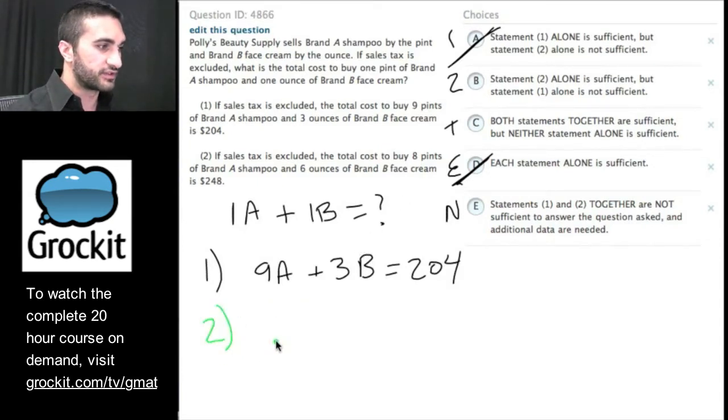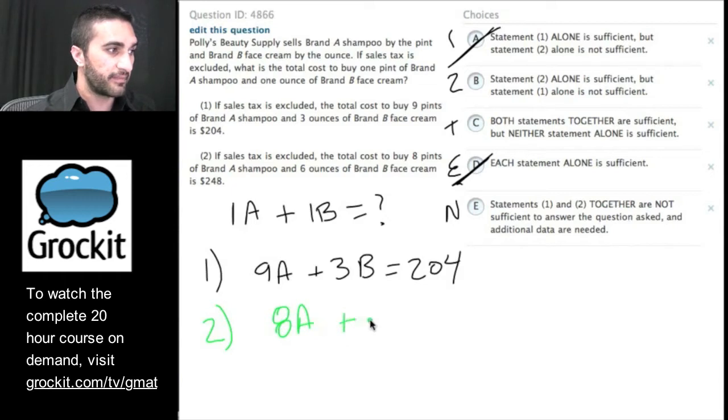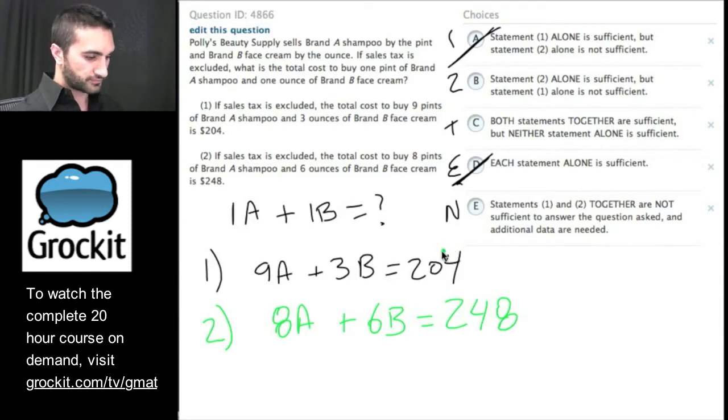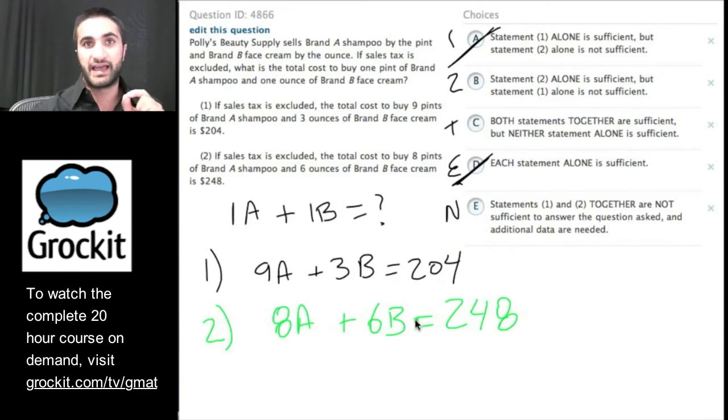Great. Let's take a look at statement two. Go ahead and read statement two and we'll work it together. So this looks pretty similar. The total cost to buy eight pints of A plus six ounces of B is $248. Now, just taking this information into account, I must ignore this. Just taking two into account, do I have enough information to know what A plus B is? Go ahead and tell me in the chat box. Great. We have the same situation. We have one equation, two unknowns. We must ignore statement one for the purpose of evaluating statement two by itself. If we can eliminate statement two for the same reason that we eliminated statement one, the only question left is if together there is enough information.